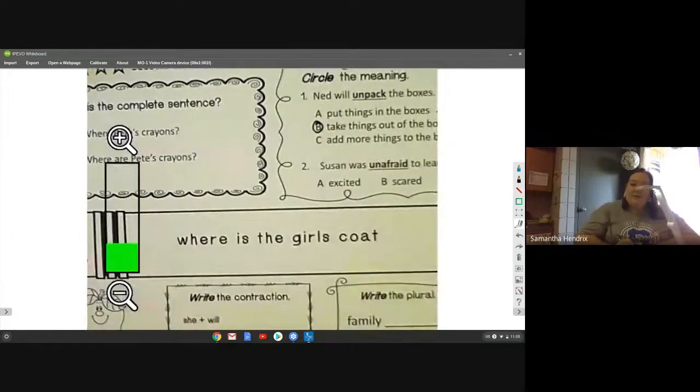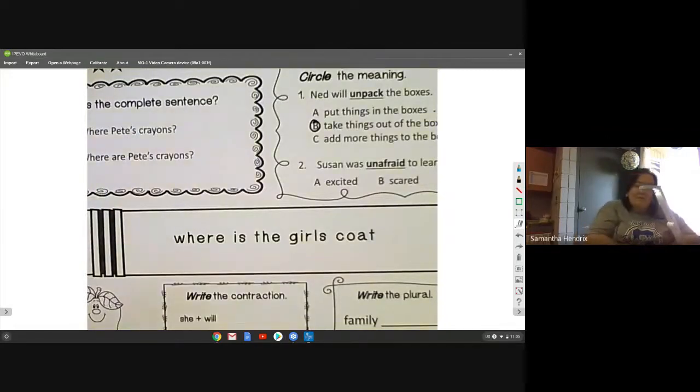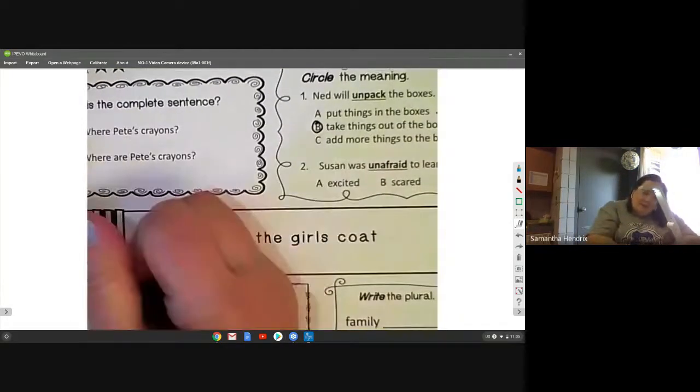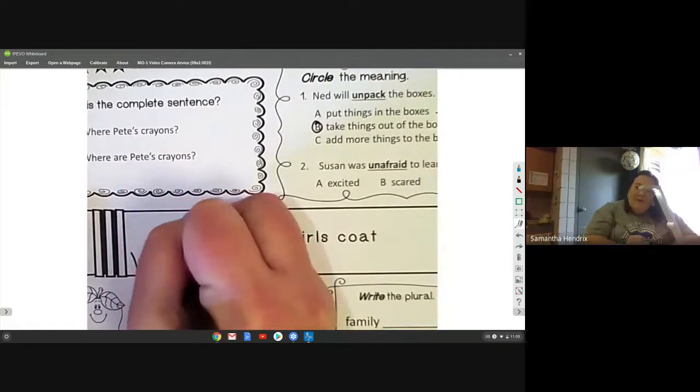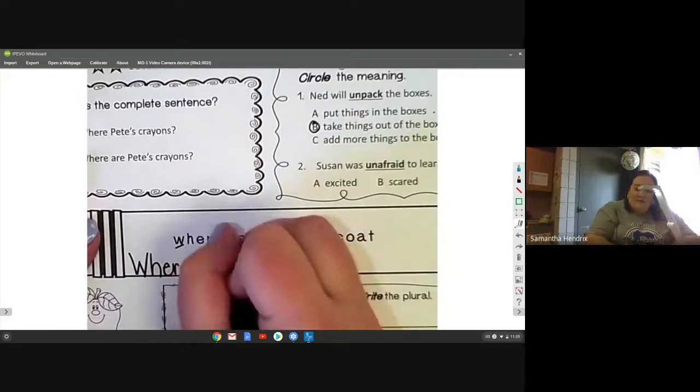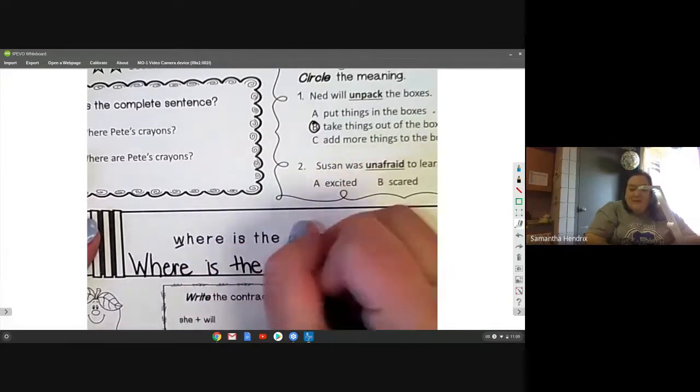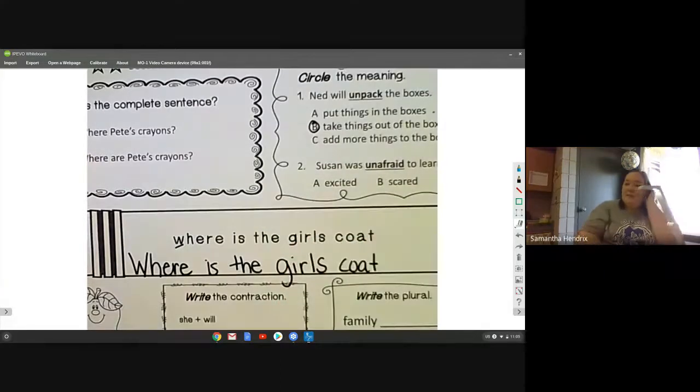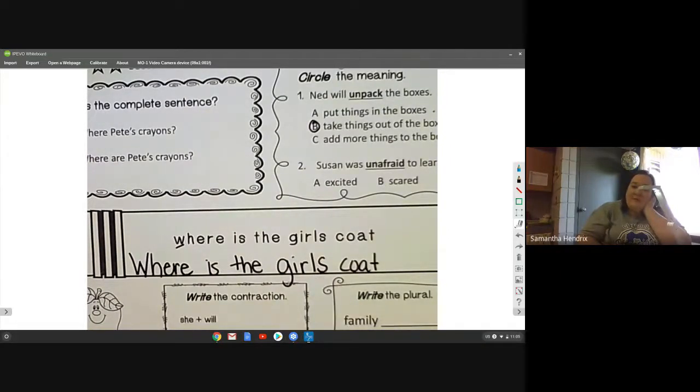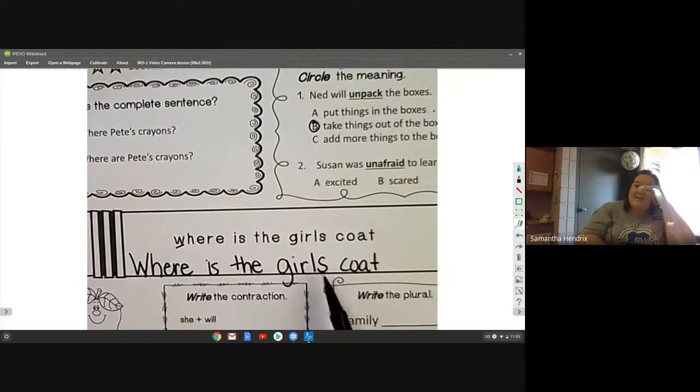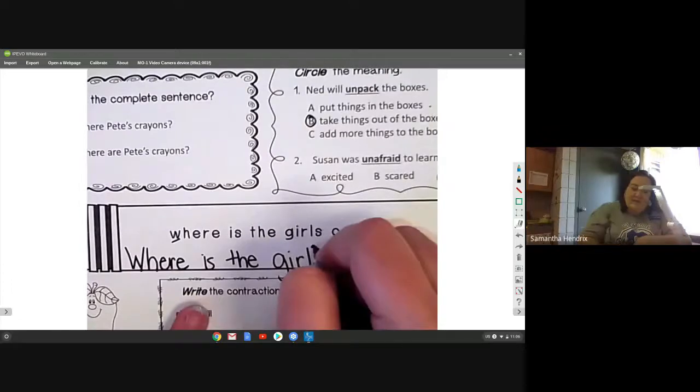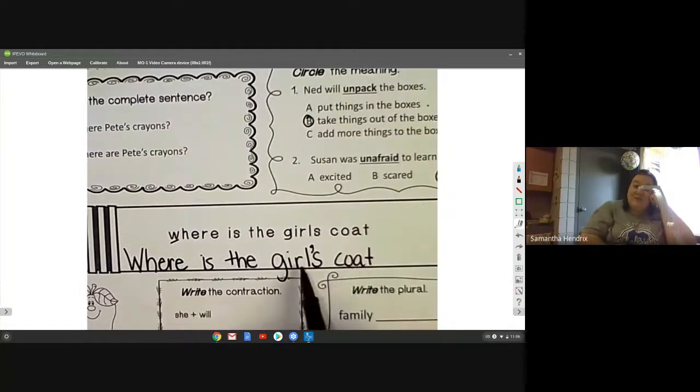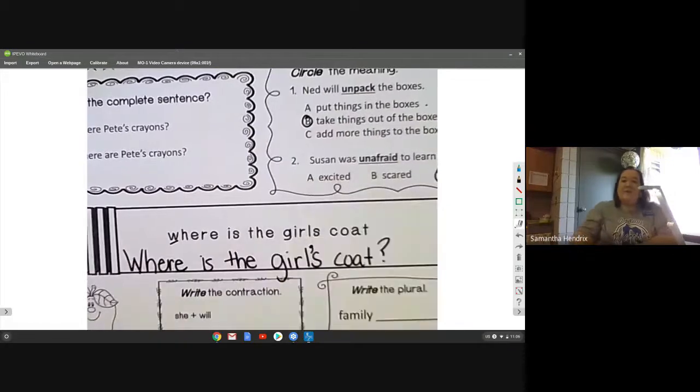Where is the girl's coat? We're going to start our sentence with a capital letter. Where is the girl's coat? Let's look at girls. We talked about it last week and it's going to be our thing this week. Whose coat? It's the girl's coat. This does not mean more than one girl. Where is the girl's coat? That's going to have an apostrophe, yes, because the coat belongs to the girl. And it's a question, so we're going to put a question mark.